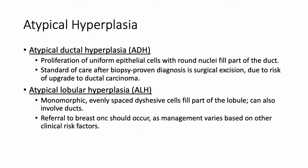Atypical hyperplasia includes atypical ductal hyperplasia (ADH) and atypical lobular hyperplasia (ALH). ADH is a proliferation of uniform epithelial cells with round nuclei that fill part of the duct; the standard of care after a biopsy-proven diagnosis is surgical excision due to the risk of upgrade to ductal carcinoma. ALH is monomorphic, evenly spaced, adhesive cells that fill part of the lobule versus the duct, though they can also involve the duct. Referral to a breast oncologist should occur as management varies based on other clinical risk factors.